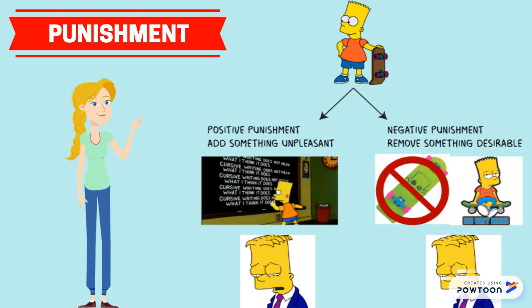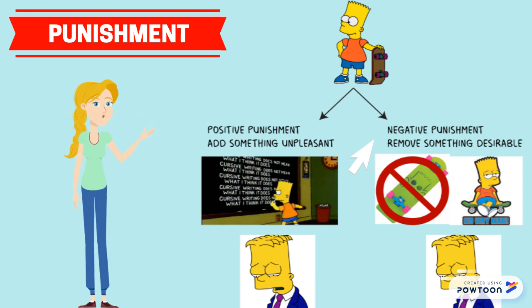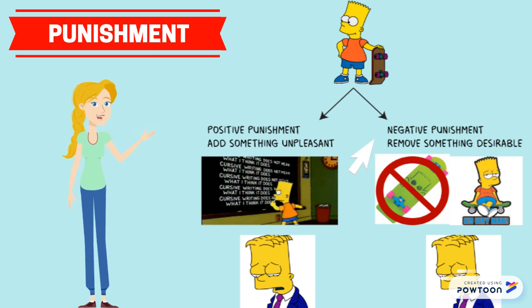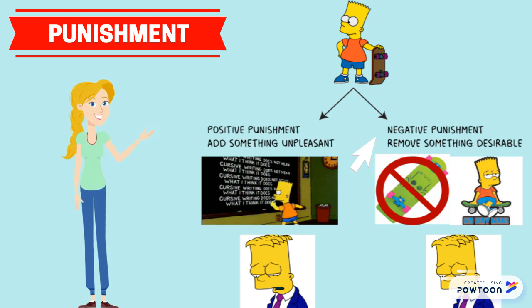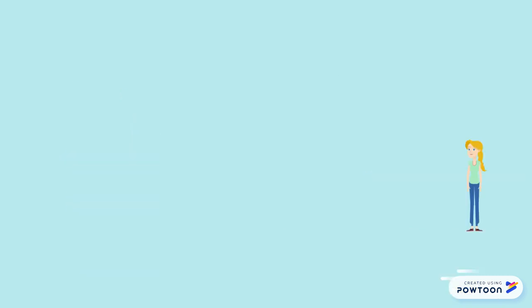Now let's think of the same scenario, but what if negative punishment was given to Bart? The teacher instead seizes Bart's skateboard. By the teacher keeping Bart's skateboard, as a consequence, Bart is discouraged from bringing the skateboard in again.